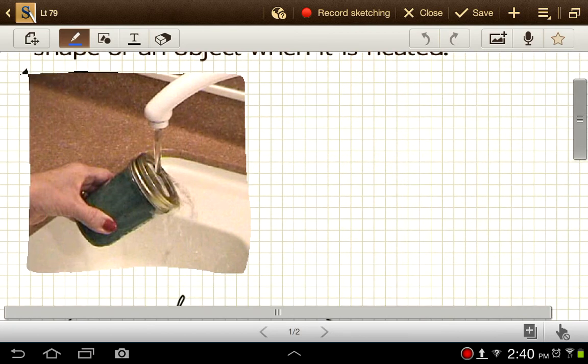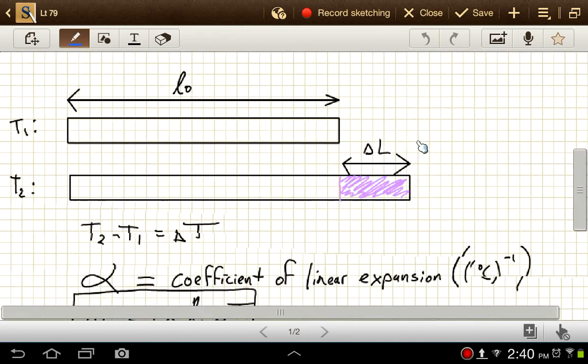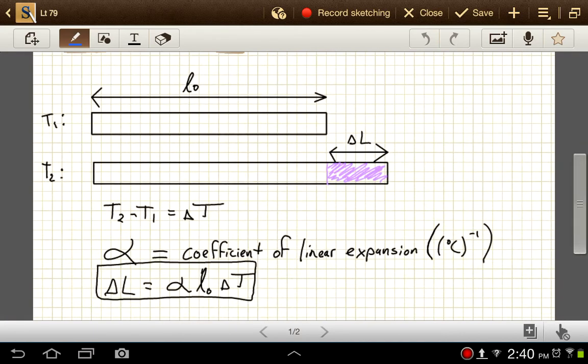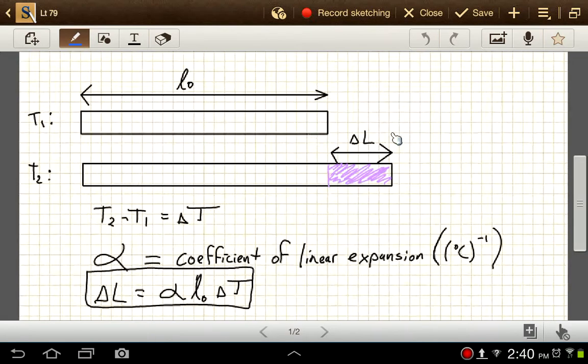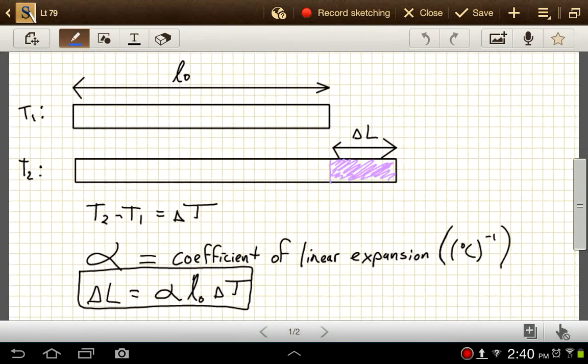Now, how much expansion we see is going to depend on a couple of different factors. First off, the change in length is going to depend on what length we started with. So we know that we're really just changing empty space, the amount of empty space between our molecules. So how many molecules we start with and how they're ordered, that's going to have an impact on things. So that starting length, and we're just going to consider expansion in one dimension here.